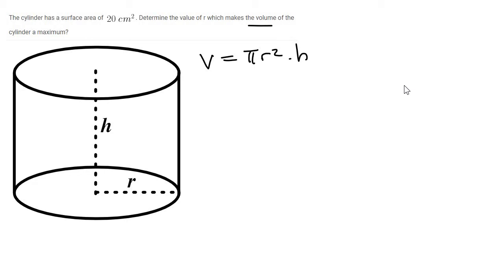Now to find minimums and maximums you would take the first derivative. However, we have two variables, r and h, and so we need to use other information to replace one of those variables.